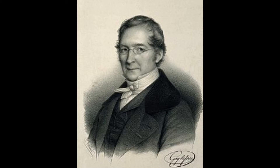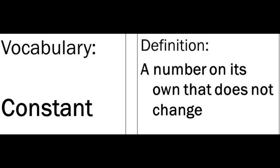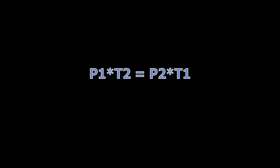And now, it is Gay-Lussac, in between pressure and temperature. As temperature increases, so does pressure. The constants are volume and moles. It's P1 times T2 equals P2 times T1. That's the formula, the formula, the formula.